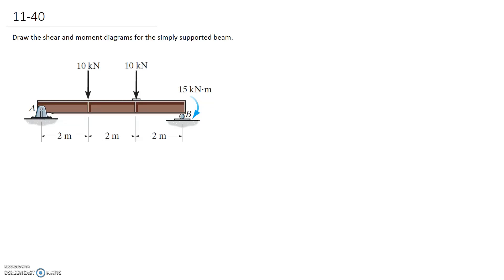For this question, we're asked to draw both the shear and moment diagrams for the simply supported beam. Given that the loading on this beam is pretty simple, we only have point loads and a couple, I would suggest that the graphical method is going to be the quickest and easiest way of drawing this diagram.